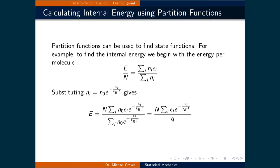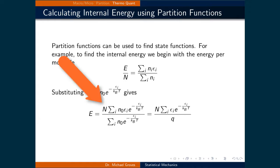Substituting in the number of particles in state n_i, which is equal to n-naught times e to the negative e_i over k_B times T, gives E over N equal to the sum over i of n-naught times e_i times e to the negative e_i over k_B T, all over the sum over i of n-naught times e to the negative e_i over k_B T. I've also multiplied both sides by N, so that the energy is equal to this expression.